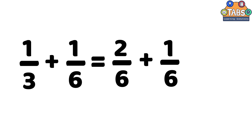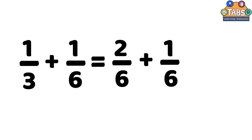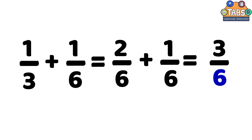We can go to the second step, which is adding the numbers at the top, or the numerators, and copying the denominator. So the equation is 2 sixths plus 1 sixth. 2 plus 1 is equal to 3, then copy the denominator.